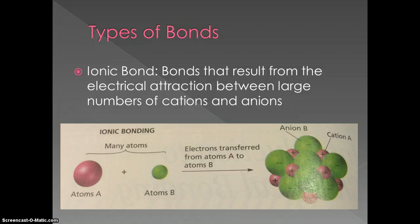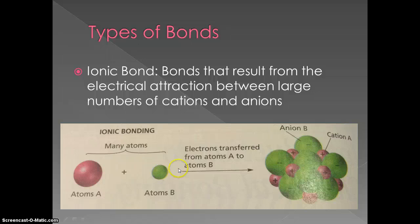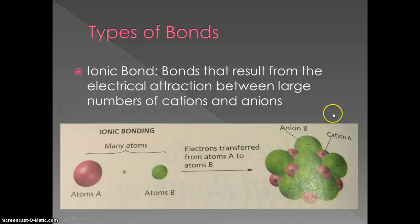Now we're going to talk about different types of bonds. The first type are ionic bonds. These are bonds that result from the electrical attraction between large numbers of cations and anions. An anion is a negative ion and a cation is a positive ion. What happens is electrons from atom A will go to atom B, which is why atom B becomes bigger and this one gets smaller.